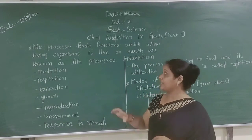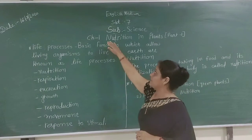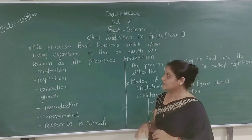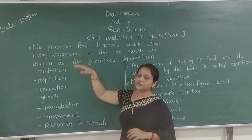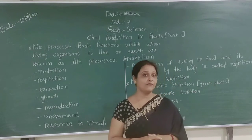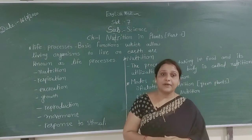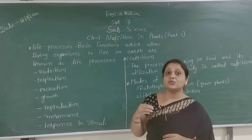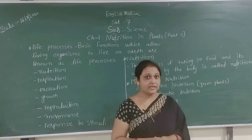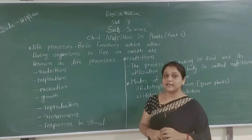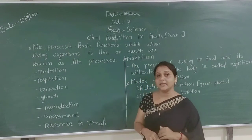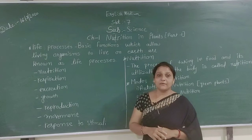Today we are taking up Chapter 1: Nutrients in Plants. All organisms which live on earth do different types of processes to survive and carry out many types of activities in their life. First, let's discuss life processes. All human beings, plants, and animals do different types of life processes.